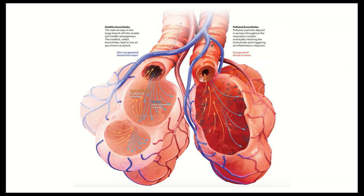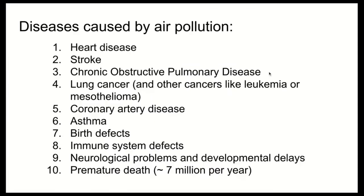In the diseased version, the alveolus is clogged and cannot absorb oxygen or remove carbon dioxide as easily. The bronchiole is inflamed and narrowed, so less air moves in and out. These are structural changes that can result from air pollution. When thinking about cardiovascular impacts, the heart has to pump blood more quickly through damaged structures, and we might eventually do damage to the heart.